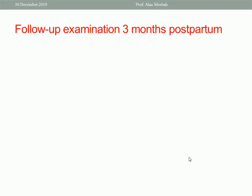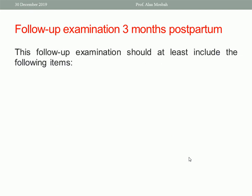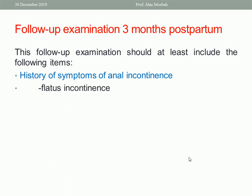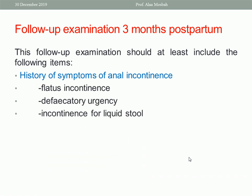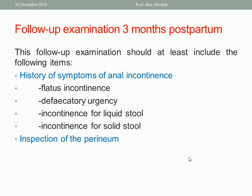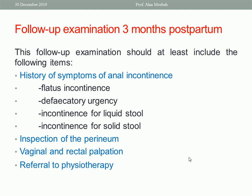Follow-up examination at three months postpartum should include: history of symptoms of anal incontinence such as flatus incontinence, defecatory urgency, incontinence for liquid stool, and incontinence for solid stool. Inspect the perineum for healing of the wound, and perform vaginal and rectal palpation to ensure everything is healed correctly — that the vagina and rectum are okay, there is no fistula, and the tone of the sphincter is satisfactory. Refer to physiotherapy.